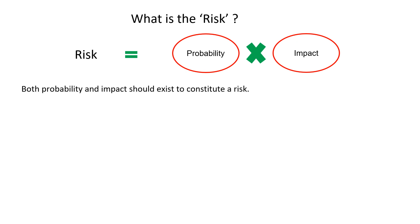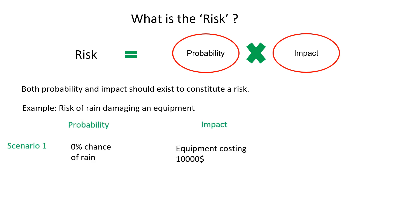Both probability and impact should exist to constitute a risk. Let us take one example: the risk of rain damaging an equipment. In scenario one, we have 0% chance of rain as the probability, whereas the impact is equipment costing $10,000. As there cannot be any rain, there is no chance of the equipment being damaged, so there is 0 risk.